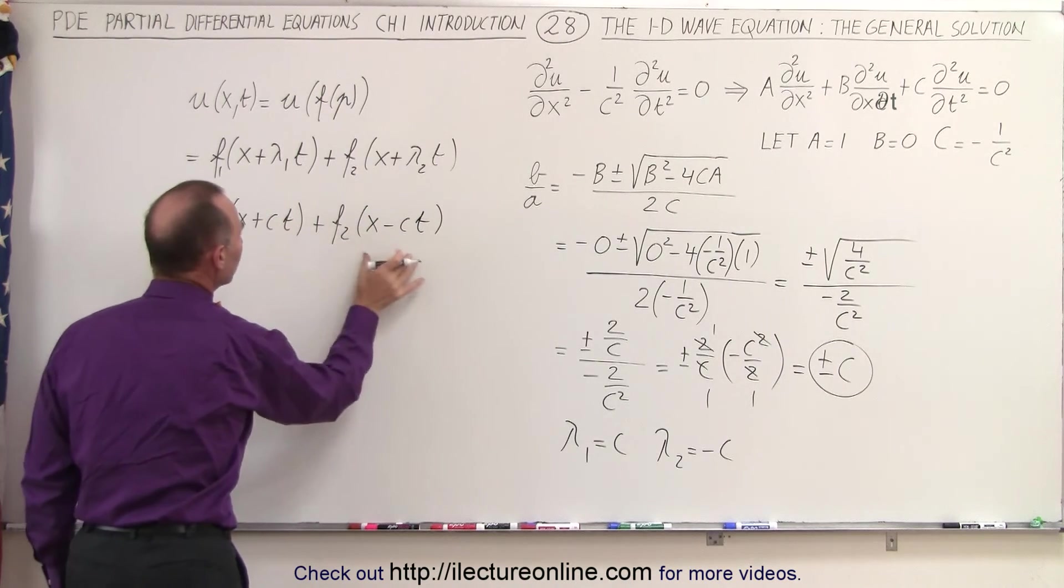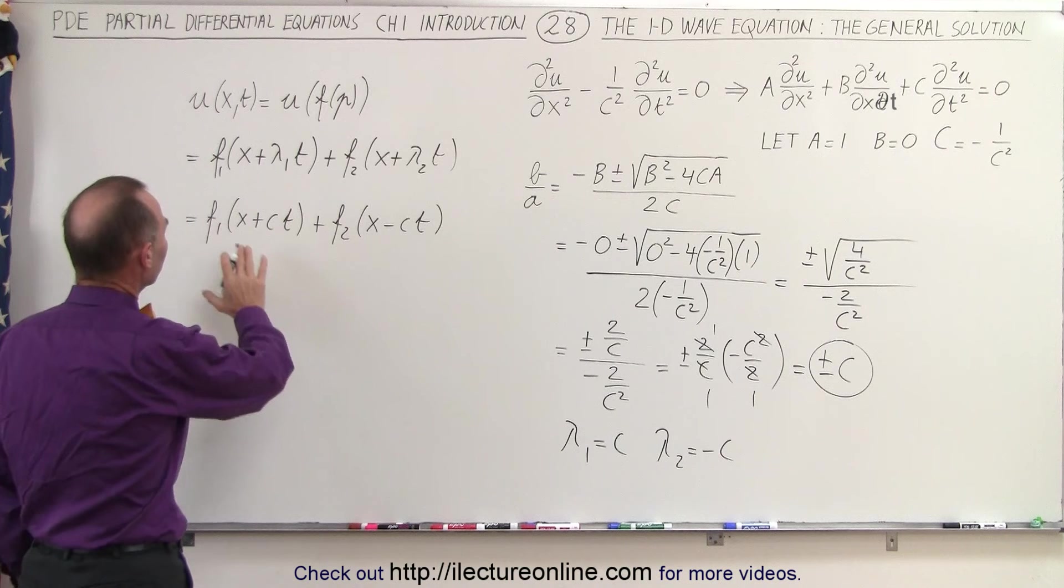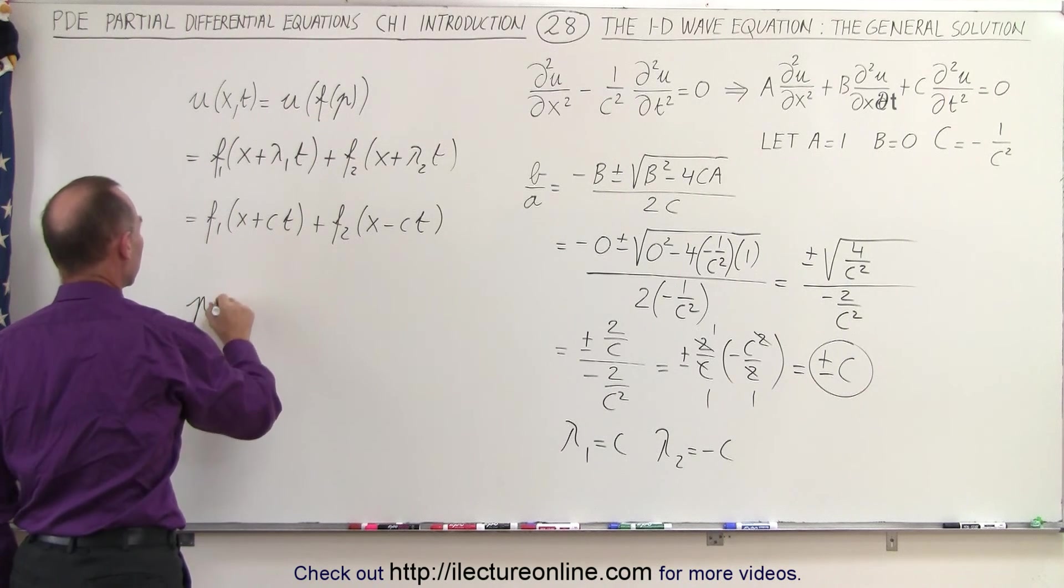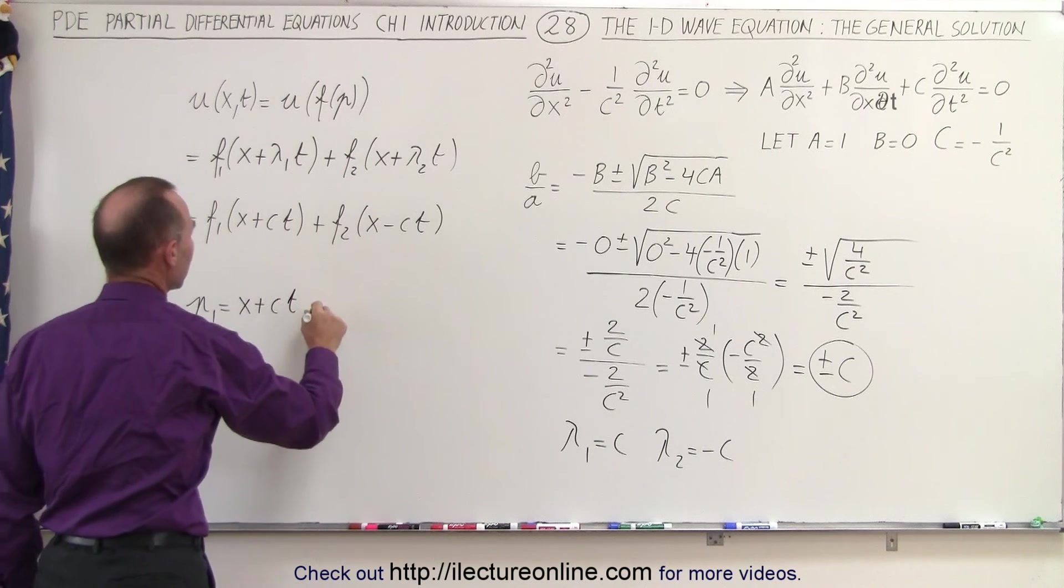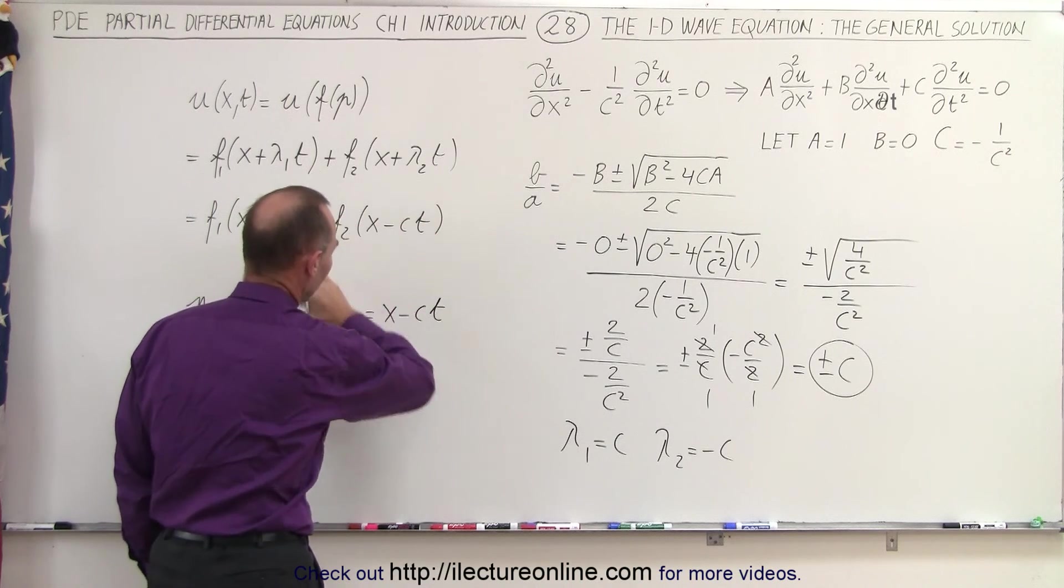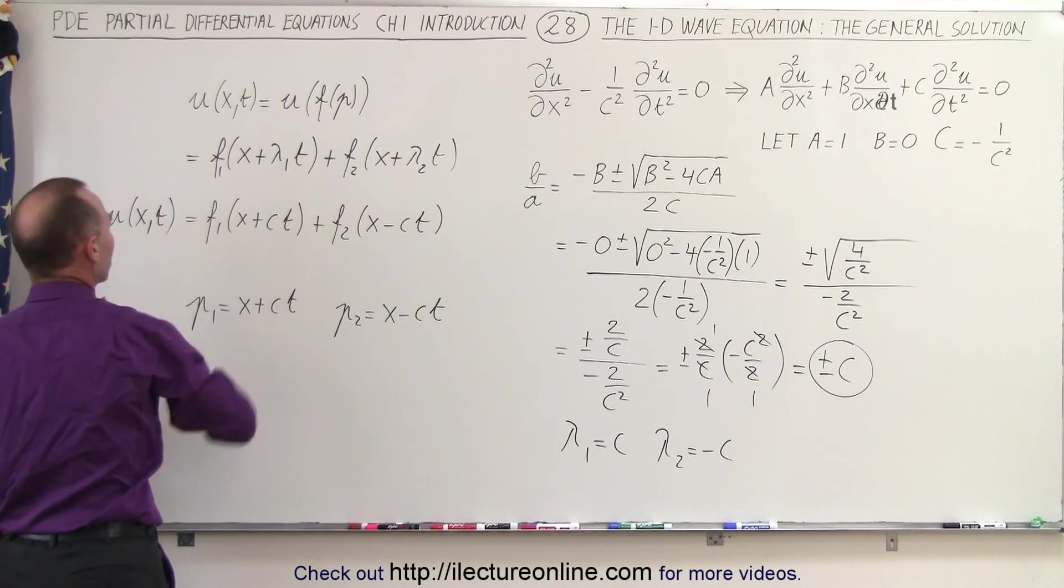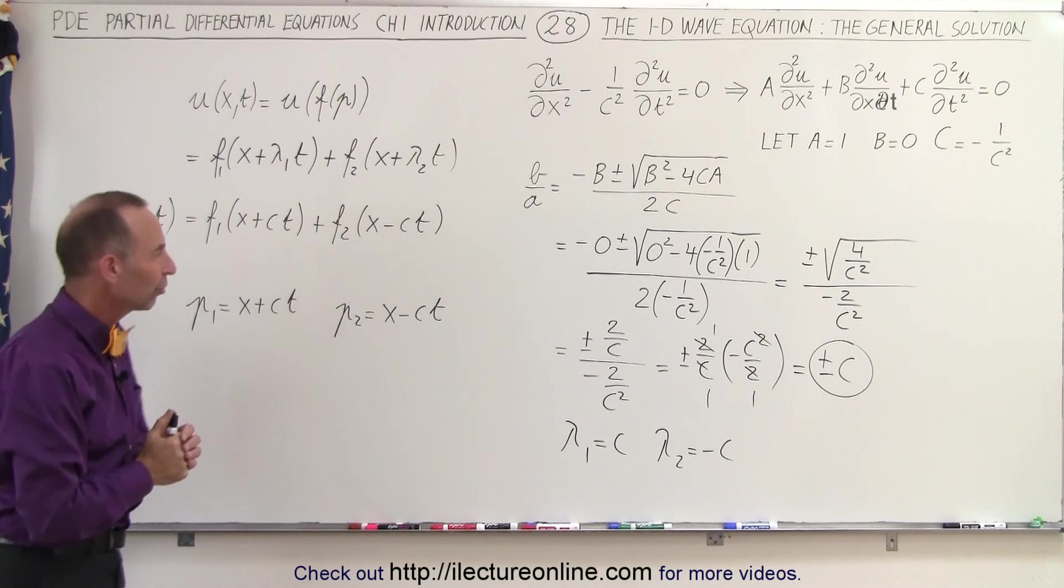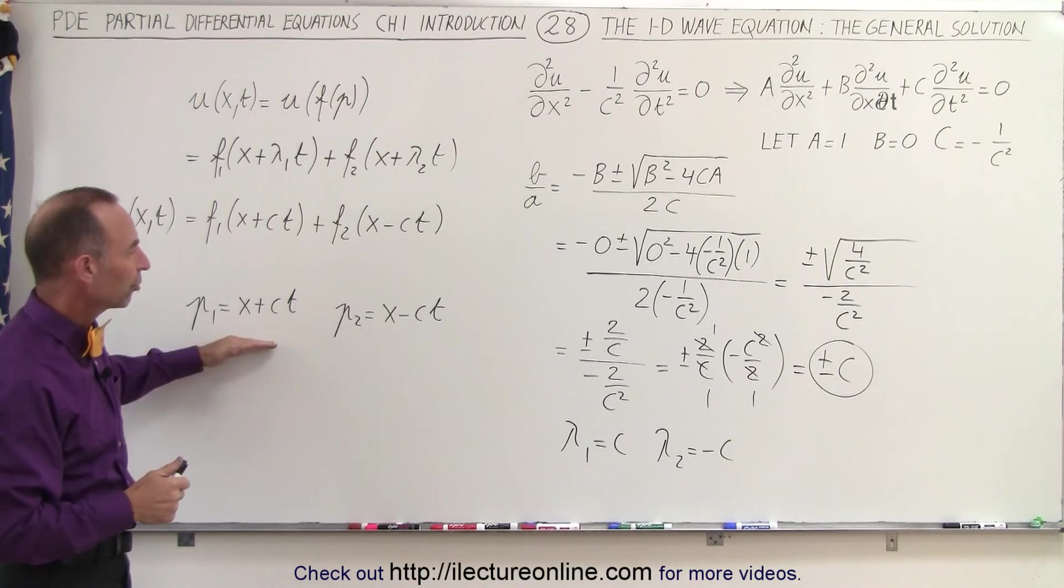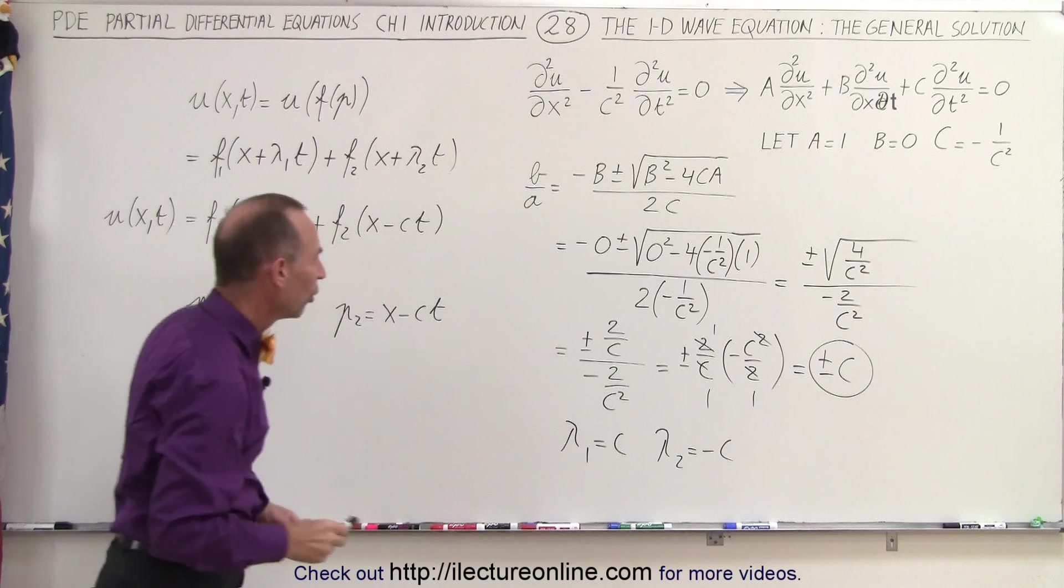These would then be the two general equations, and this can also be written as follows. Since the functions are basically linear functions of p, we can say that p1 is equal to x plus ct, and p2 is equal to x minus ct, so these are two different forms of the solution. U as a function of x and t can be written like that. This is the general solution to the second order partial differential equation under these conditions, representing a one-dimensional wave equation.